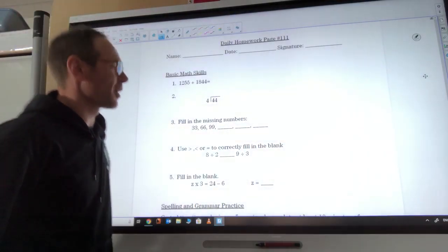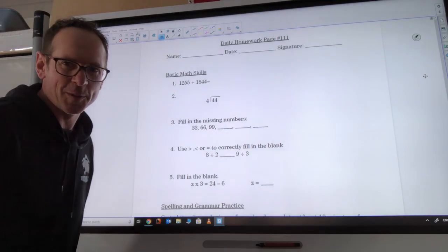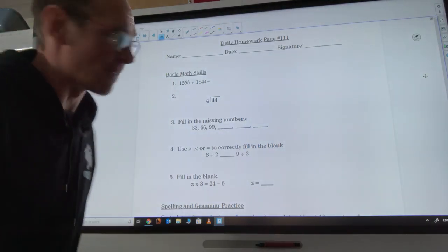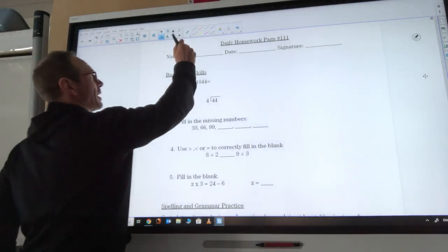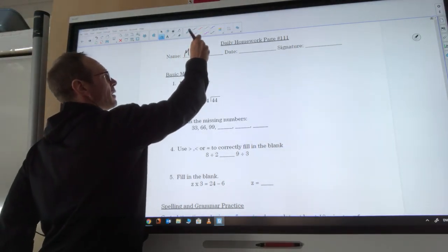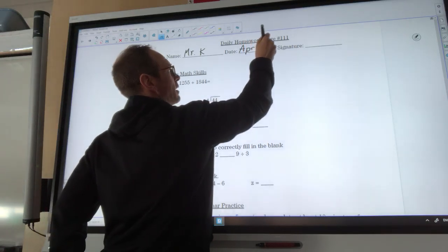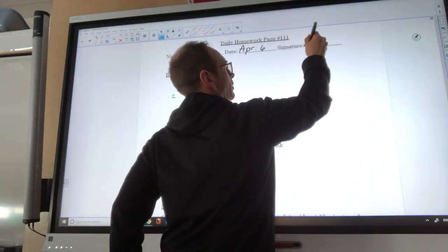Hi guys, I'm coming to you from 4K in Whispering Ridge School and we're going to review daily homework page number 111. So we'll start off by putting our name, today's date which is April 6th, and sign it with our best cursive writing.